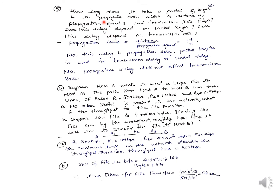The fifth question: how long does it take a packet of length L to propagate over a link of distance D with propagation speed S and transmission rate R? Does this delay depend on packet length or transmission rate? Propagation delay = D/S. You can see it does not depend on packet length — packet length is used for transmission delay. Propagation delay also does not depend on transmission rate, as only propagation speed is used.